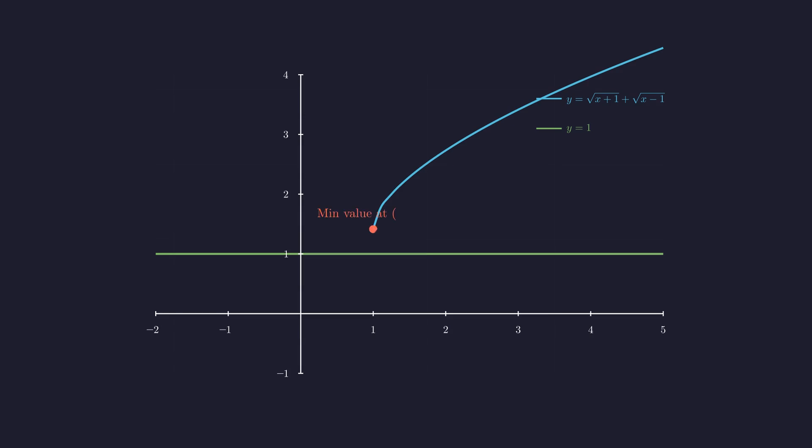Notice the blue curve is only defined for x ≥ 1, and the green line is simply the constant 1. The minimum value of the blue curve happens right at x equals 1: square root of 2 plus 0, which is just square root of 2, about 1.414. Since the minimum value is already greater than 1, the blue curve never dips down to meet the green line — they never intersect, which suggests there's no real solution. But let's prove this algebraically to be sure.